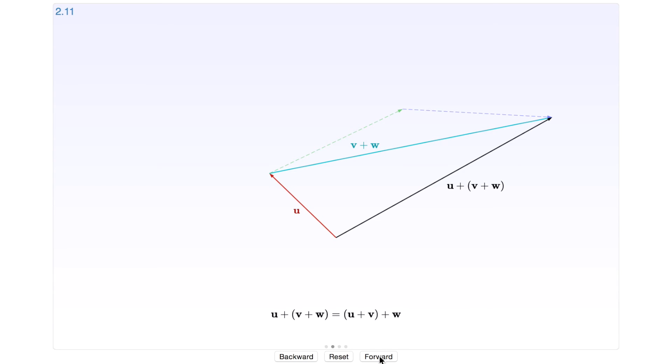That is the same thing as taking u plus v here, which is the yellow vector, and then adding w. You get the same black vector here.